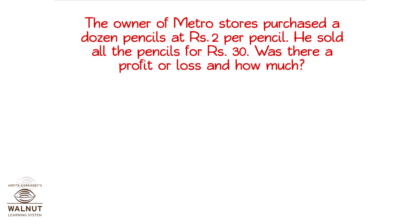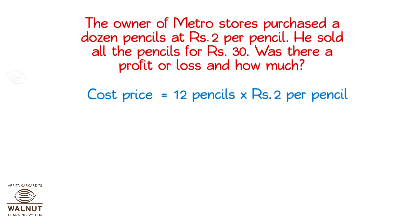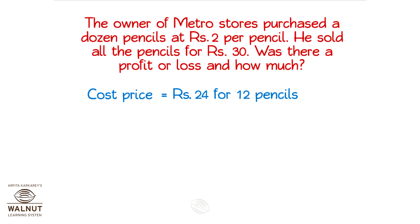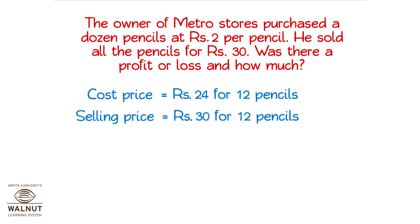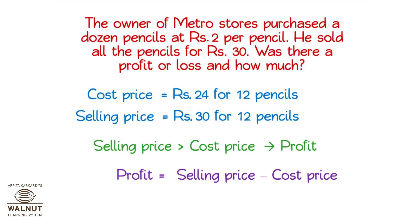The owner of Metro Stores purchased a dozen pencils at Rs. 2 per pencil and sold all the pencils for Rs. 30. Was there a profit or loss, and how much? Let us find the cost price first. The owner bought 12 pencils at Rs. 2 each, so his cost is 2 × 12 = Rs. 24. He sold them all at Rs. 30, which is the selling price. Since the selling price is greater, it is a profit. The profit is Rs. 30 minus Rs. 24, which is Rs. 6.